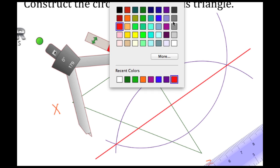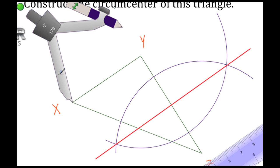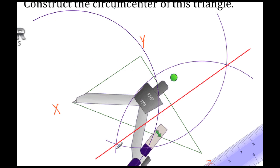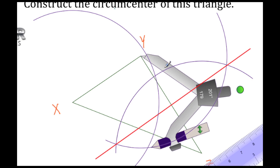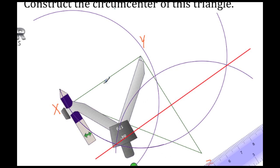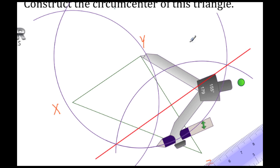Now I want to place the pointy end here on X, draw my arc, and place it here on Y and draw my other arc. Again looking for the intersection point. So I have an intersection point here at the top and bottom.